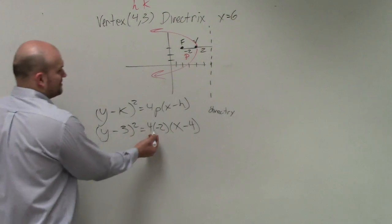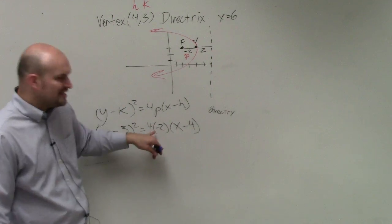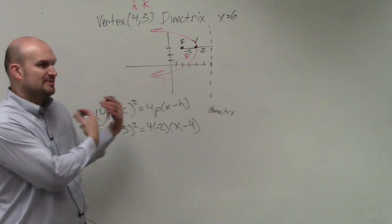For instance, think about like, remember when we had a quadratic and we had a negative a, it made the graph open down. You can think of this as like a negative. It's negative, so it's making it go in the negative direction, which would be to the left.